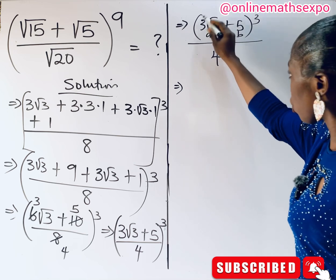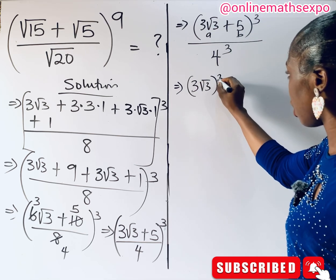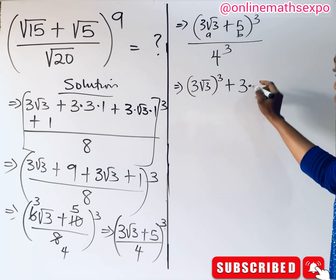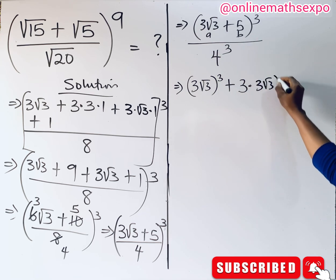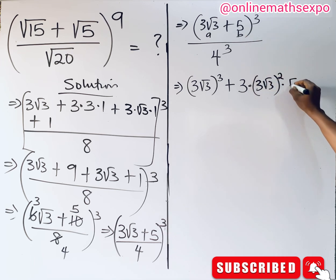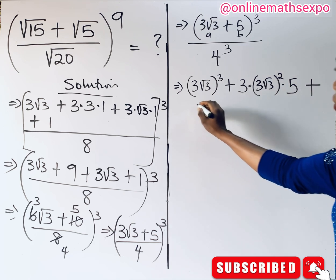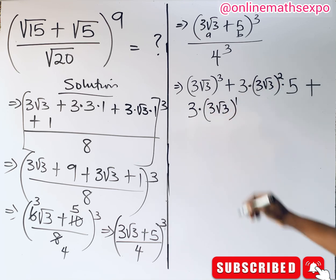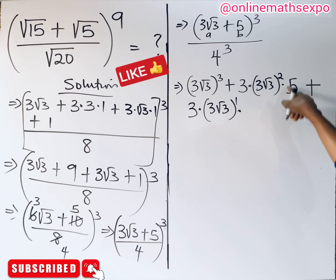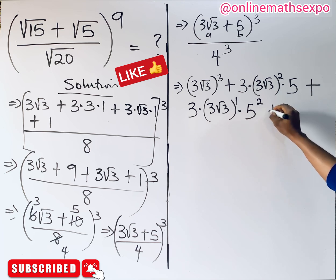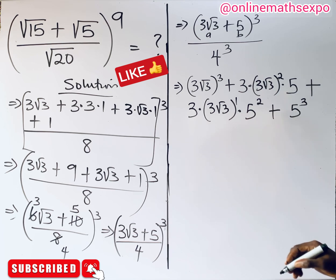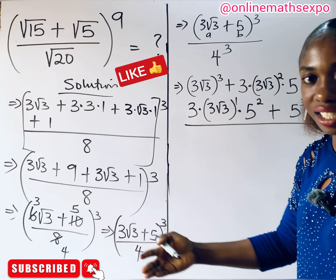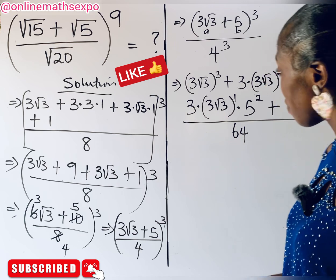Using (a + b)^3 = a^3 + 3a²b + 3ab² + b^3 with a = 3√3 and b = 5: (3√3)^3 + 3·(3√3)²·5 + 3·(3√3)·5² + 5^3, all divided by 64.